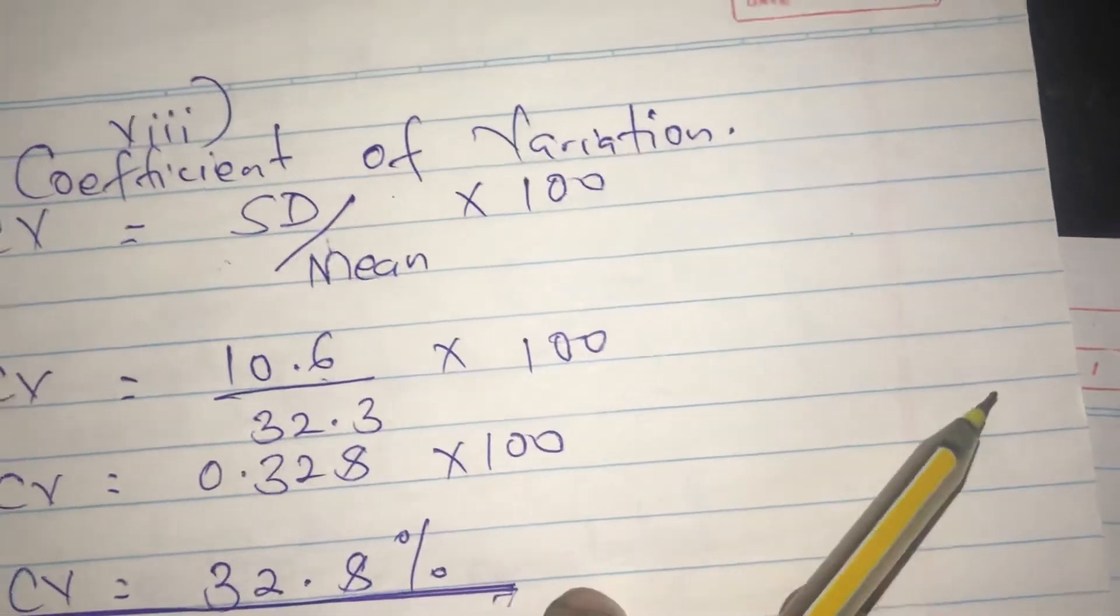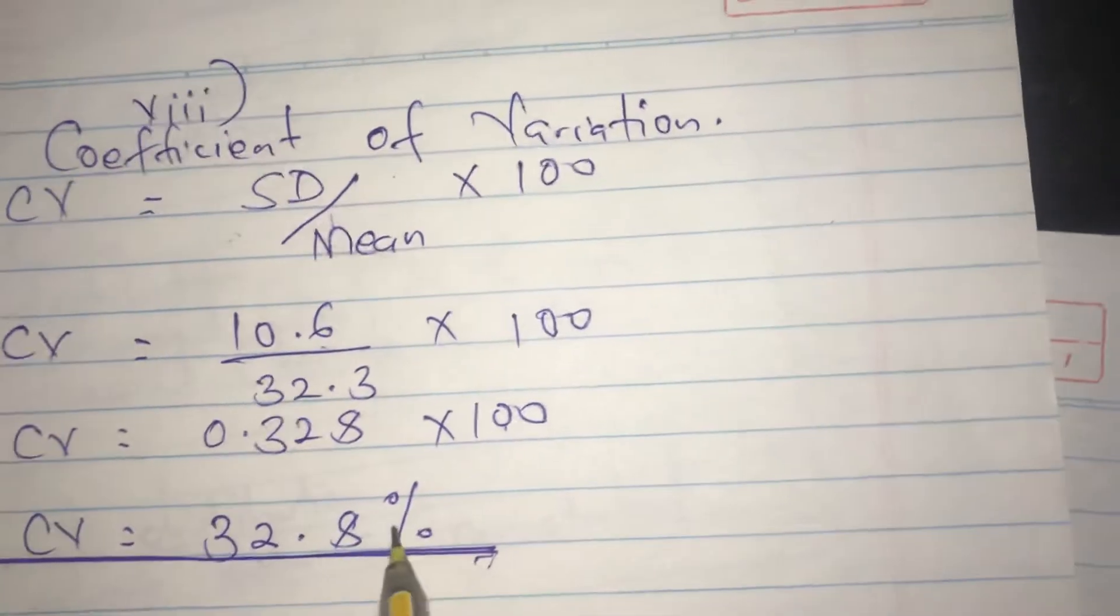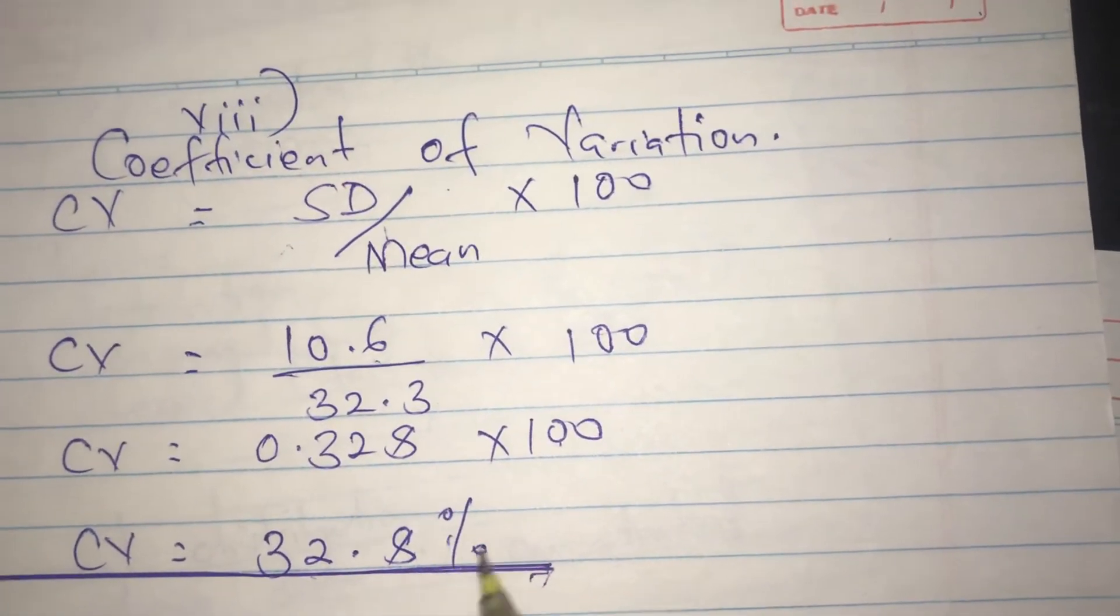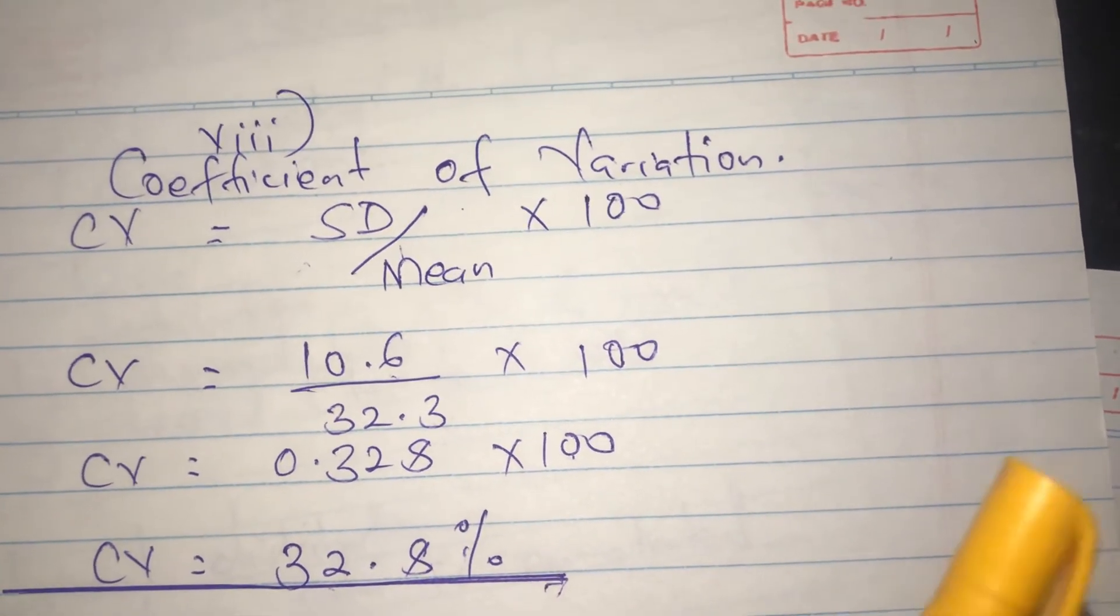The coefficient of variation is always in percentages since we multiply by 100, so it is 32.8%. That is how we calculate coefficient of variation. Thanks for watching, and this has been the end of grouped data.